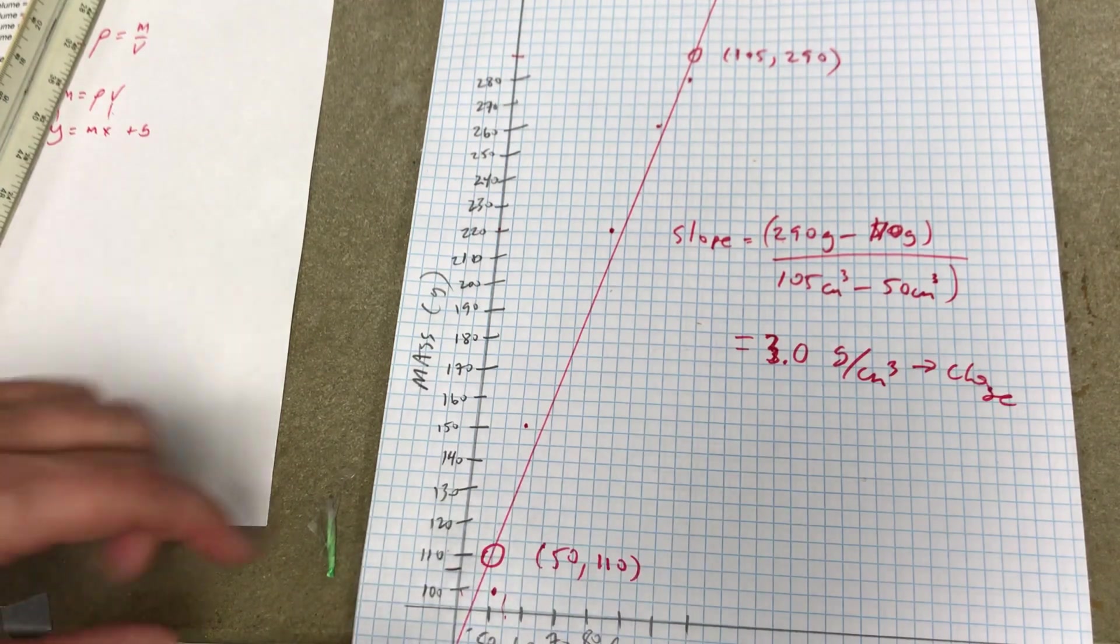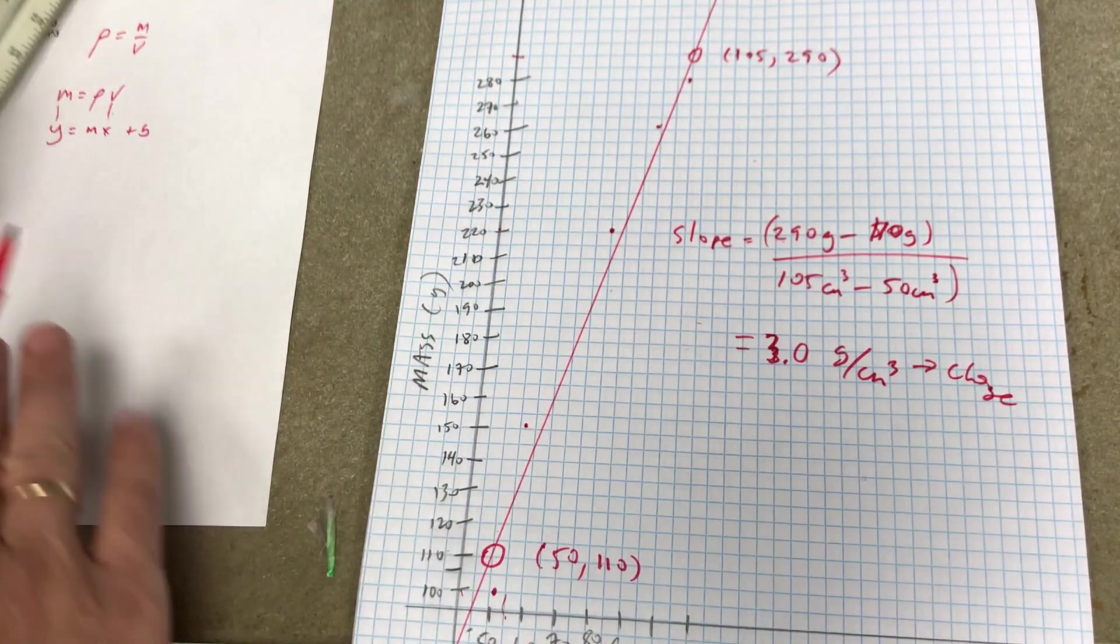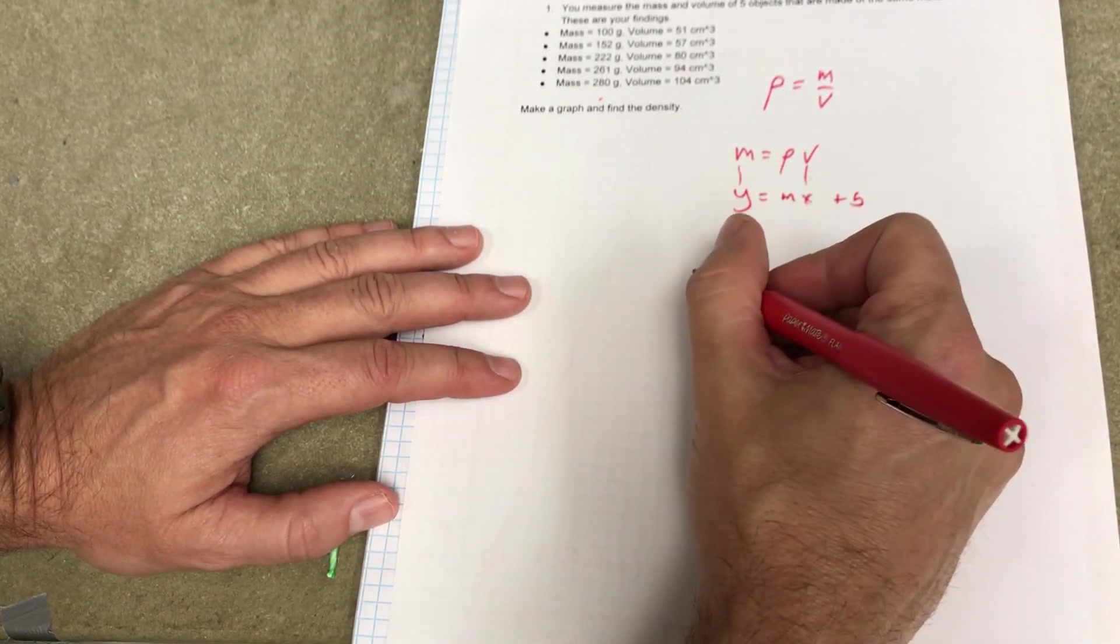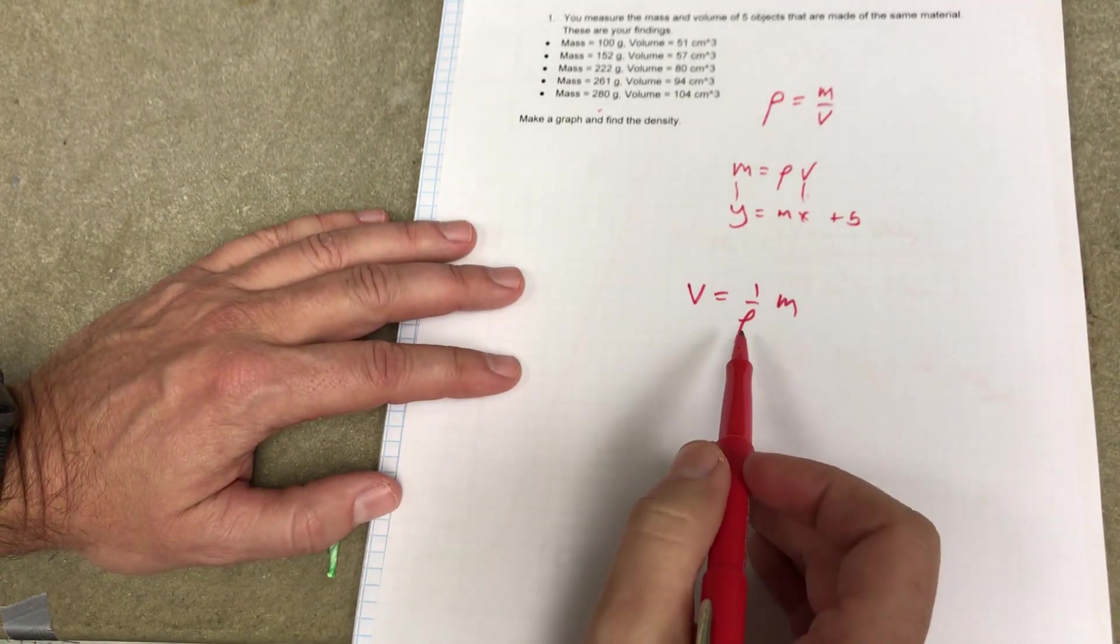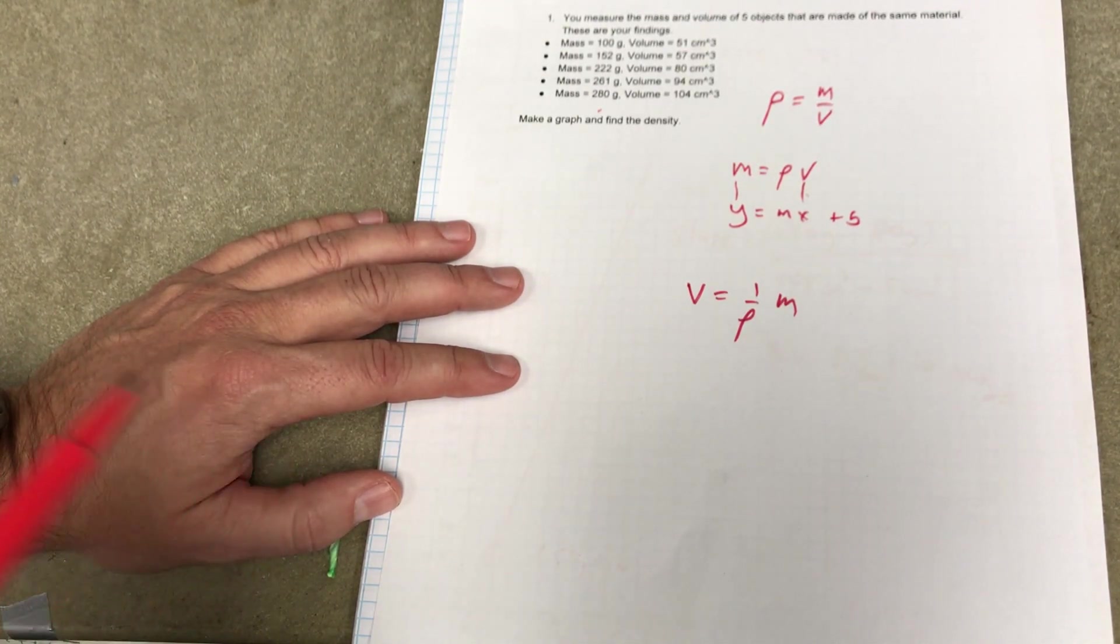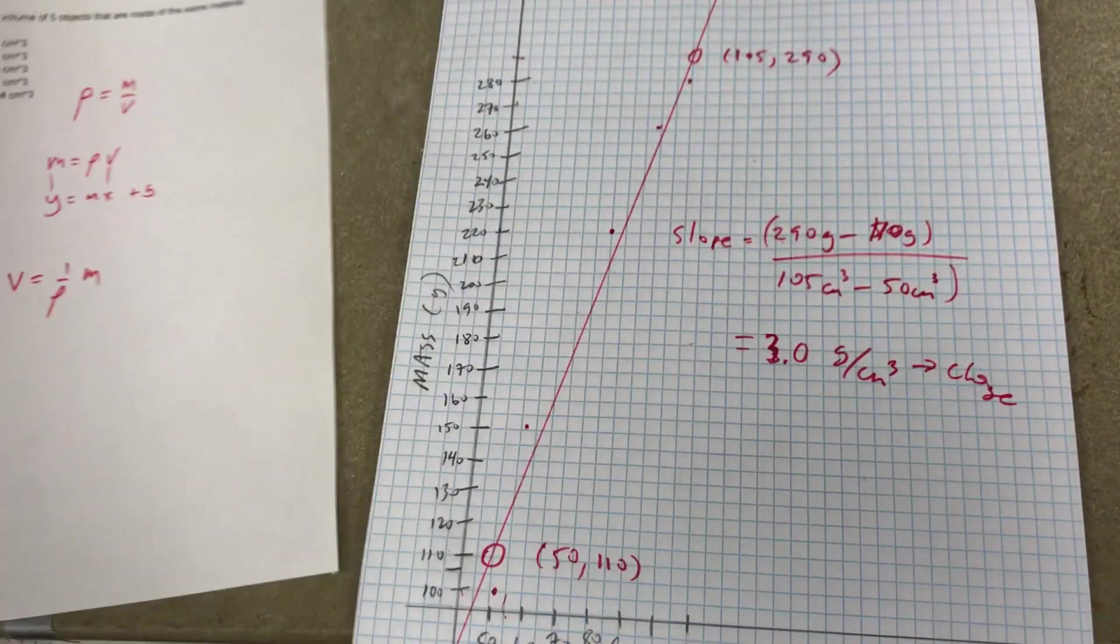Now, really quickly, what if I had plotted volume versus mass? If I plotted volume versus mass, this equation would be volume equals 1 over the density times the mass. So the slope would be 1 over the density. So once I get the slope, I'd have to take 1 over the slope to get the density. And that's how I would do this problem. Thank you.